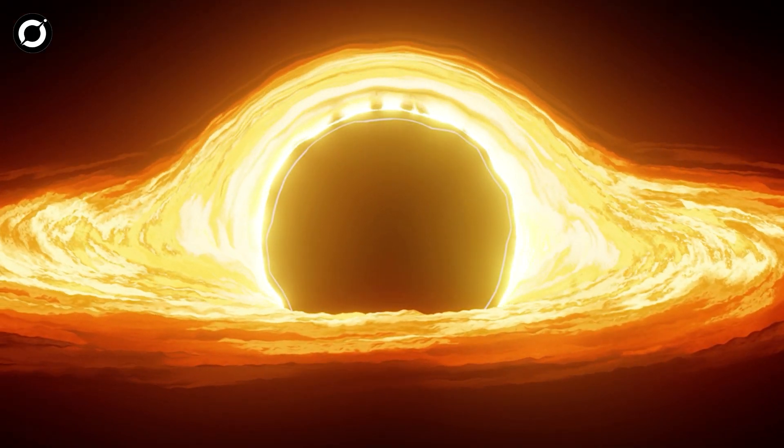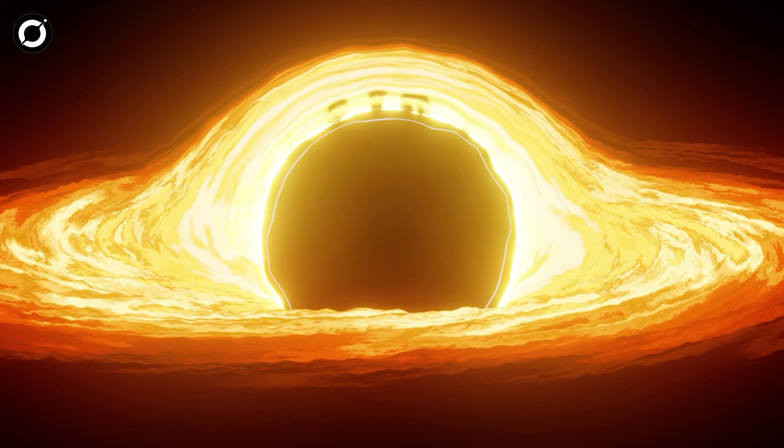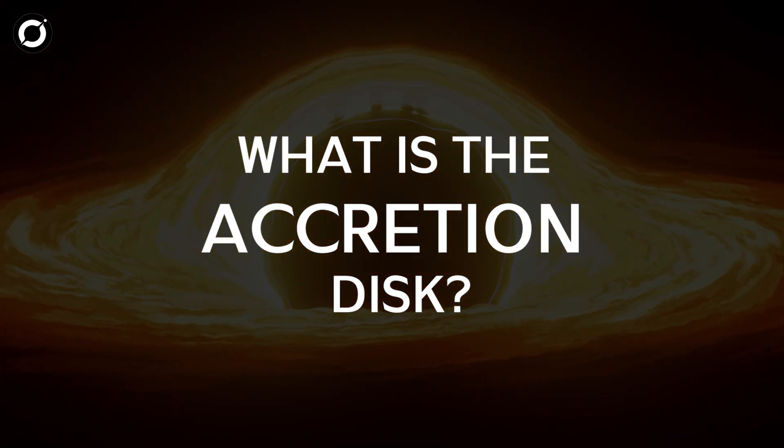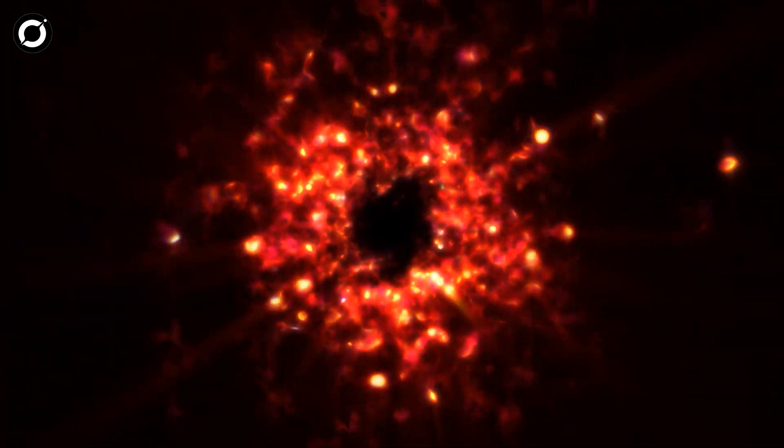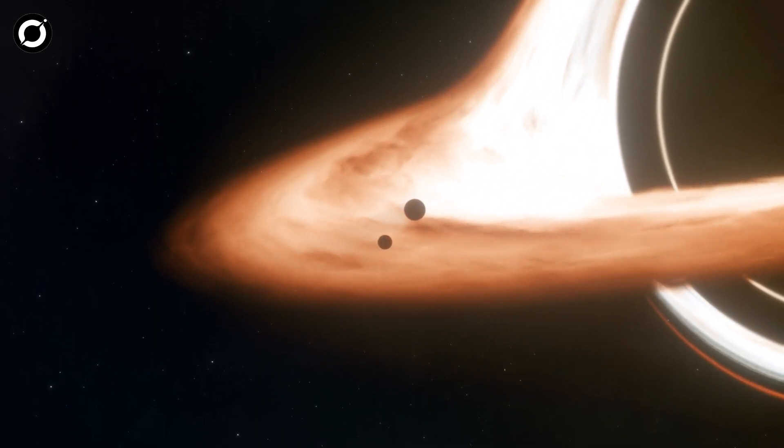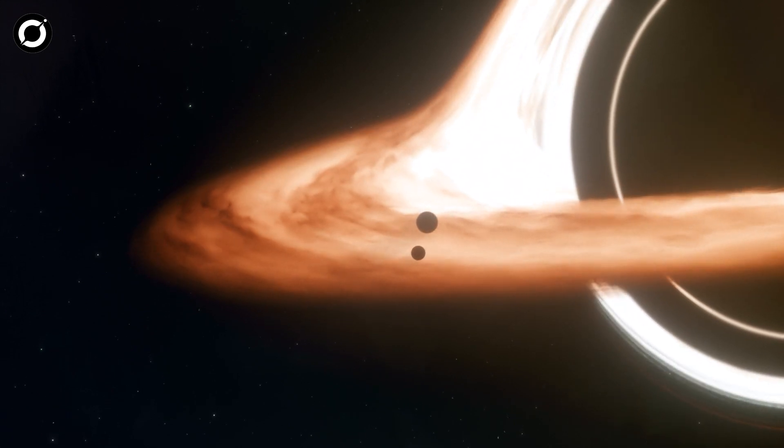To track the stars, NIRSpec will have to see their light against the overwhelmingly bright background of the black hole's accretion disk. What is the accretion disk? It is a structure, most often a circumstellar disk, formed by diffuse material in orbital motion around a massive central body.